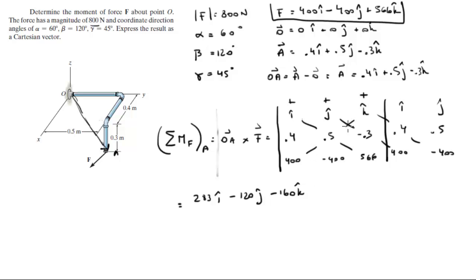And your negative diagonals: negative, negative, negative. Negative 400 times 0.5 times k. Negative 400 times negative 0.3 times i, that's three negatives, so it's minus 120i. And negative 566 times 0.4 times j is minus 226.4j.